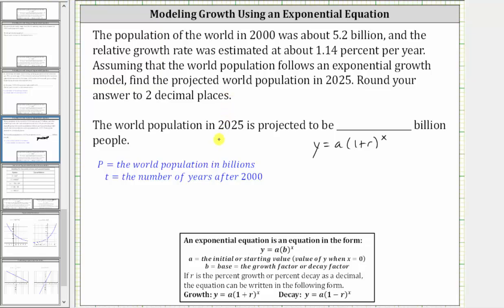Because the population in the year 2000 was 5.2 billion, a is equal to 5.2. 5.2 is already in billions because the variable p is also already in billions. And because the relative growth rate is 1.14%, r is equal to 1.14%, which for the equation must be in decimal form, which is equal to 0.0114.